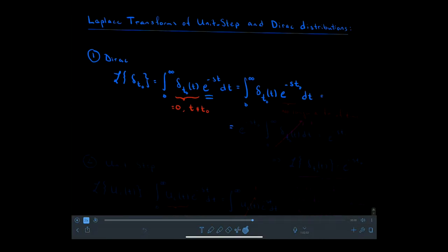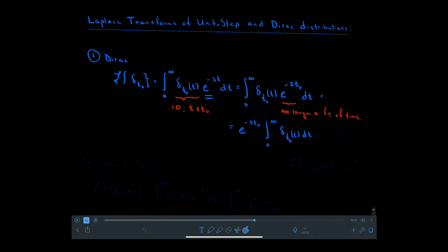Now e^{-st0} is no longer a function of time, so I can bring that term outside the integral. I have e^{-st0} out front, times the integral from 0 to infinity of delta_{t0}(t) dt. That integral has been defined to equal 1, so the whole integral yields 1, leaving behind just e^{-st0}. That is the Laplace transform of the delta function.